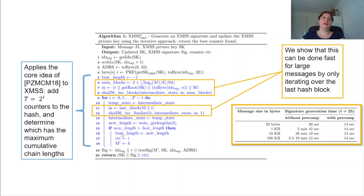And this is also where we include this message length independence that we add. So we show that this adding these counters can actually be done really fast, even for large messages by only iterating over the last hash block. So if we straightforwardly apply the technique of PZMC18, then for large messages and applying these many counters, it would fast turn into a huge signature generation time for large values of T. Well, we show that if we only iterate over the last hash block, then with this pre-computation, then actually the signing time remains constant for a different message size.